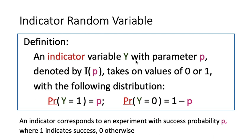An indicator random variable, let's call it Y, with a parameter p, is usually denoted by I(p). This random variable will take on values of 0 or 1 only. The chance that Y is equal to 1 is p, and so the chance that Y is equal to 0, which is the other case, is equal to 1 minus p.